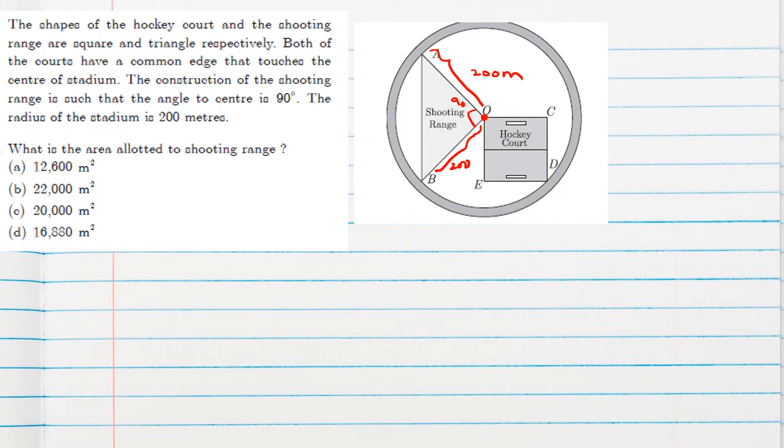Now what is the area allotted to shooting range? This triangular region area we should find. So area of triangle OAB. Clearly this angle is 90 degrees, that means it's a right angle triangle. We can apply half B into H formula directly. One side we can consider as base, another we can consider as height.